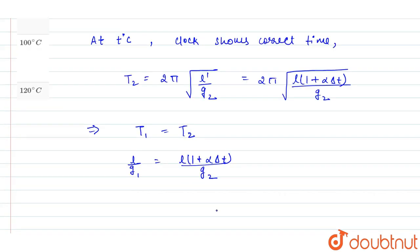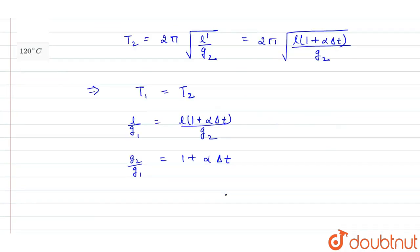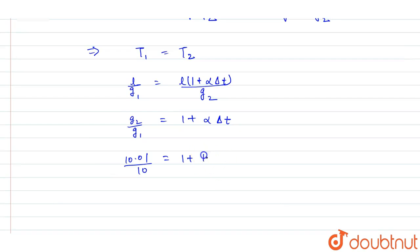Now we can write that g2 by g1 equals 1 plus alpha into delta T. g2 is 10.01 and g1 is 10. This equals 1 plus alpha value 10 to the power minus 5, and change in temperature will be T minus 20 because finally temperature is T degrees Celsius and initially it was 20.